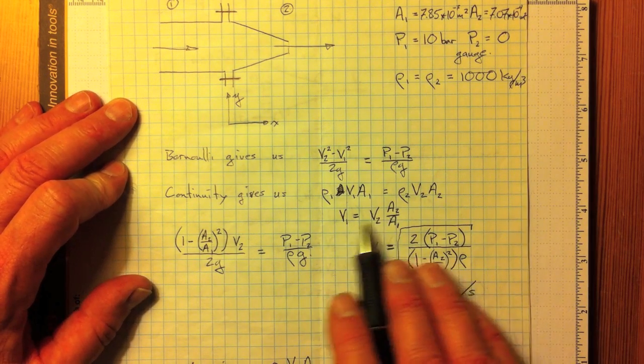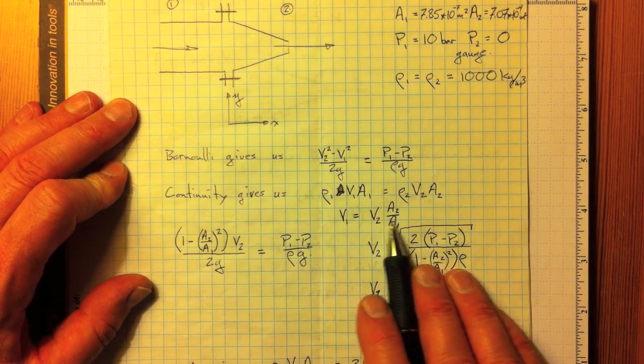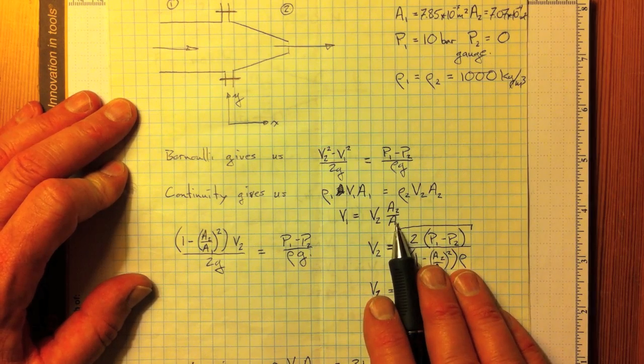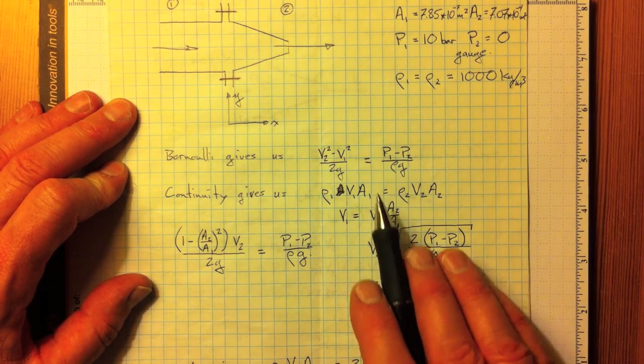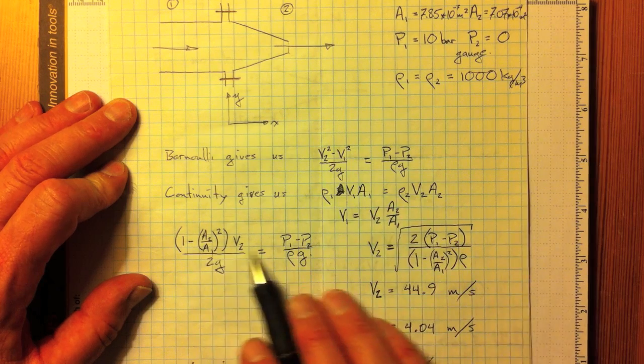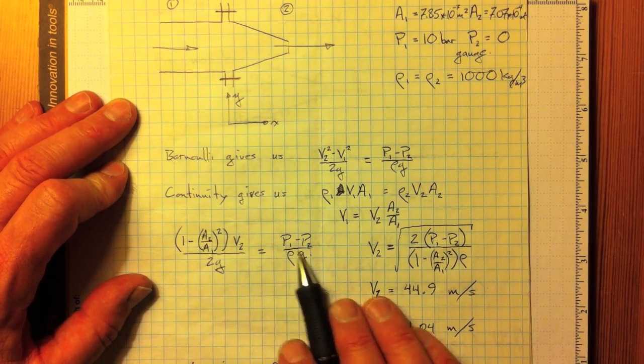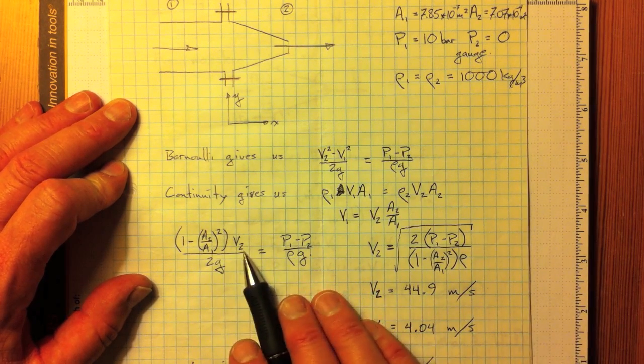The velocities are related to each other V1 to V2 by the area ratio, and thus if we substitute that information back into here, we can get this arrangement for Bernoulli's equation.